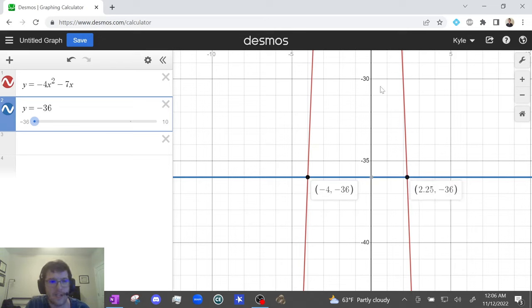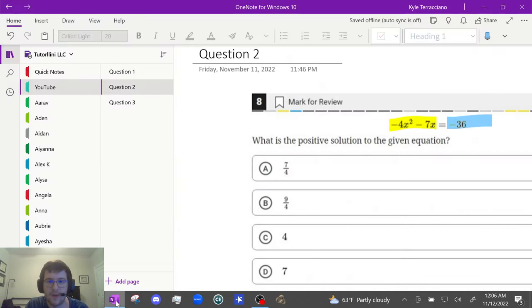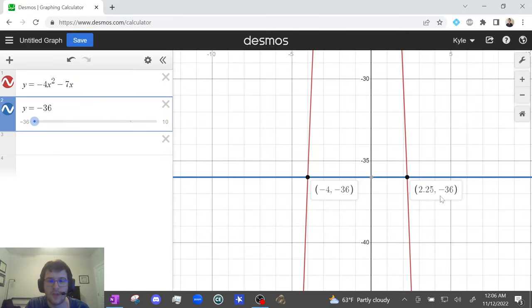And again, we only care about the x values, right? Because that's what we want. We have 2.25. And again, the question asks for the positive solution. So we're more concerned with this 2.25. And you see 2.25 is not an answer choice.